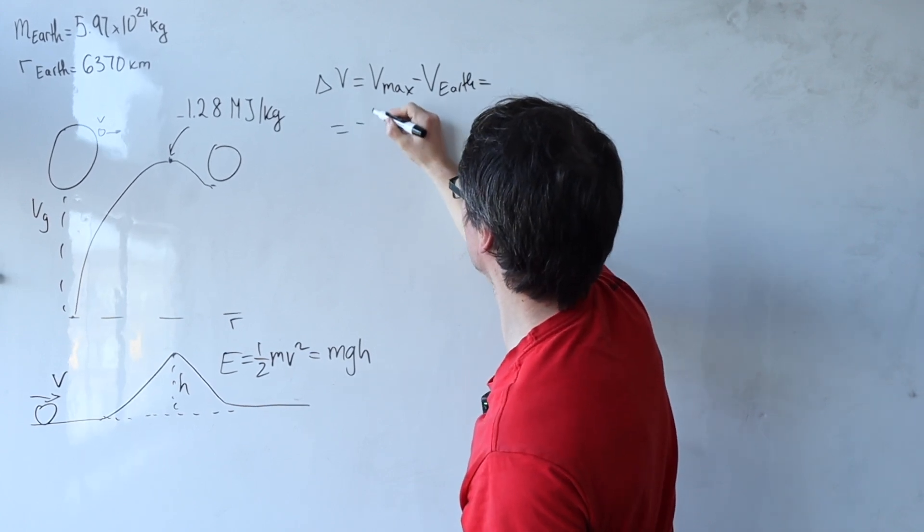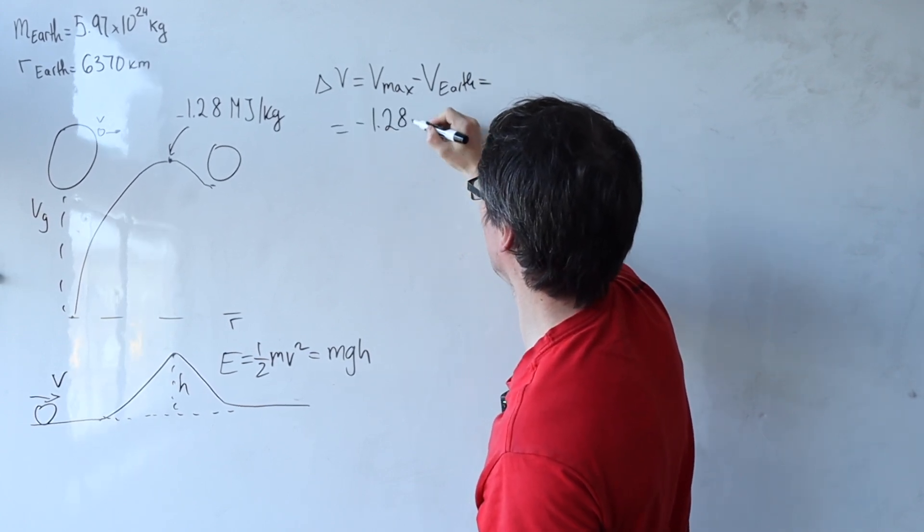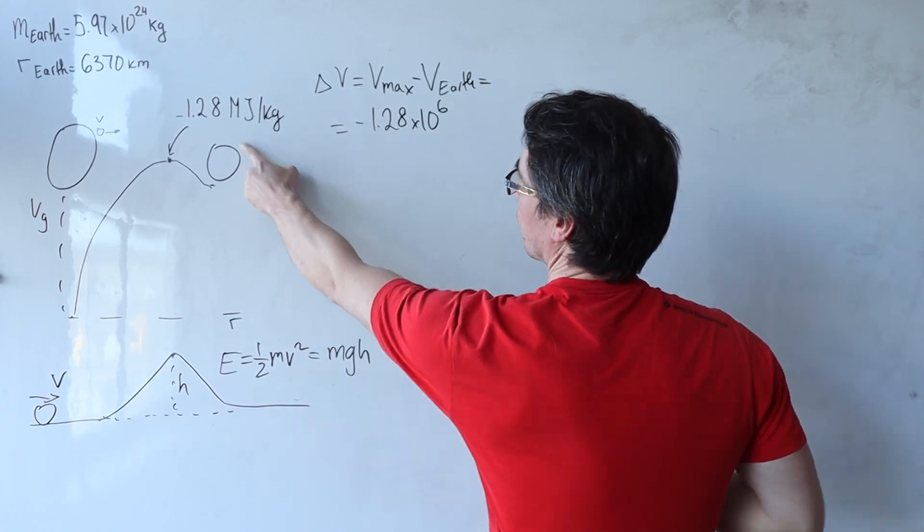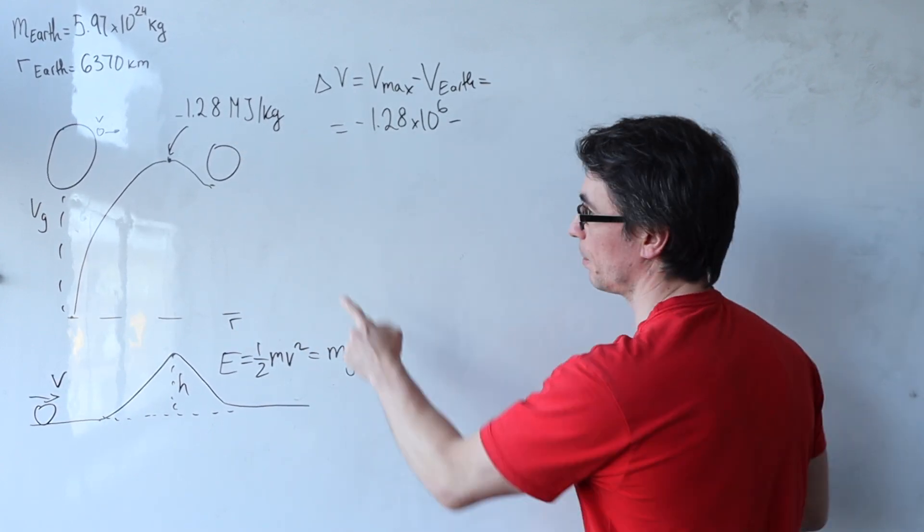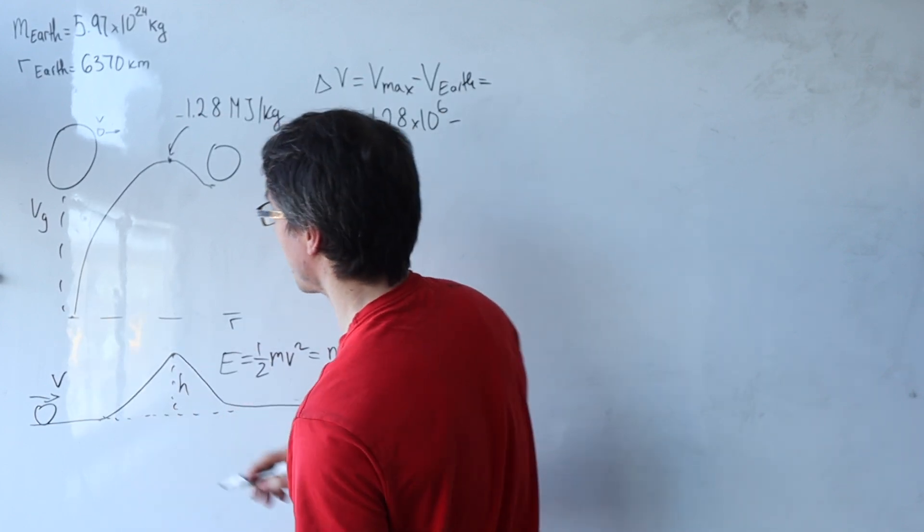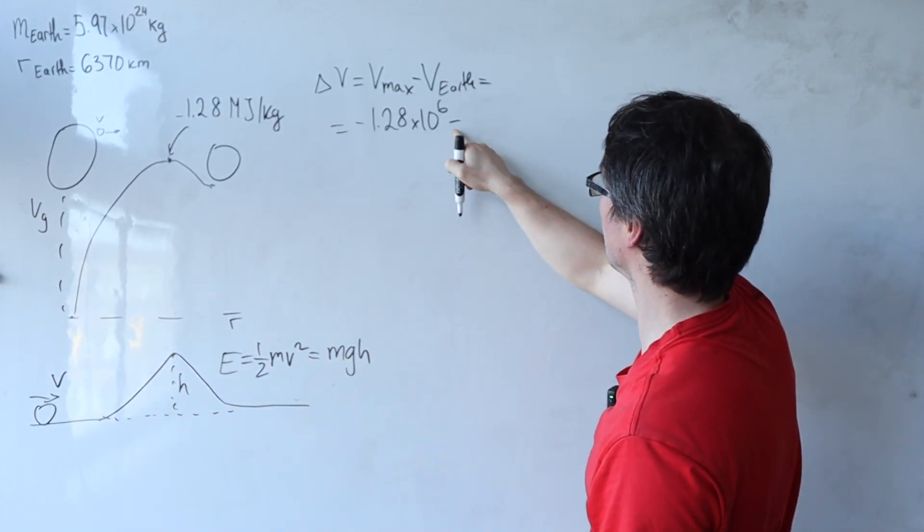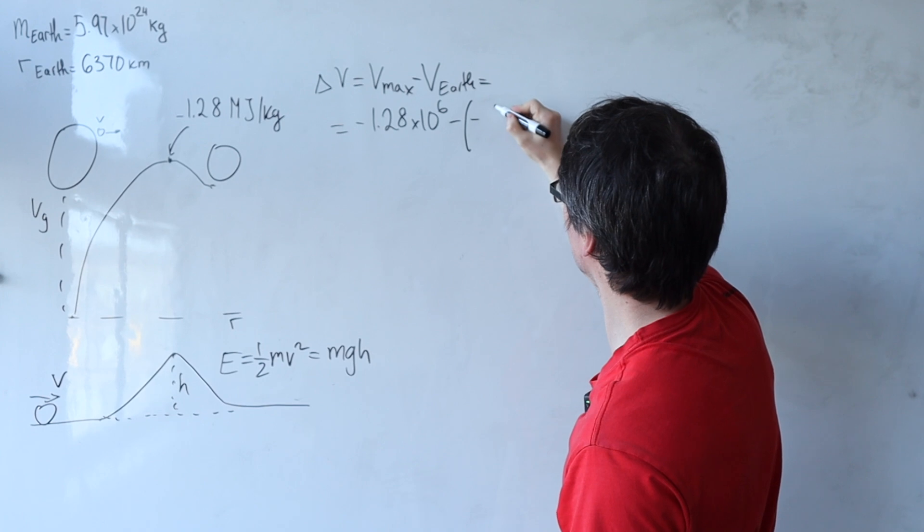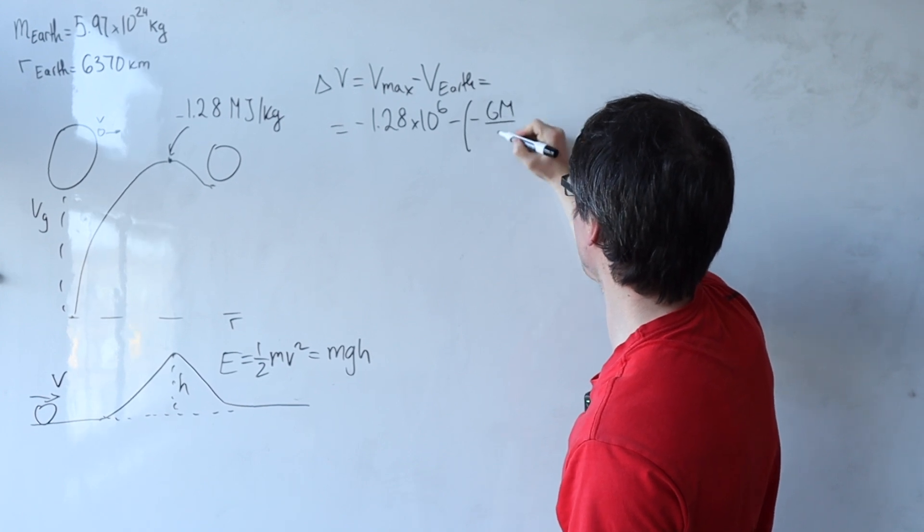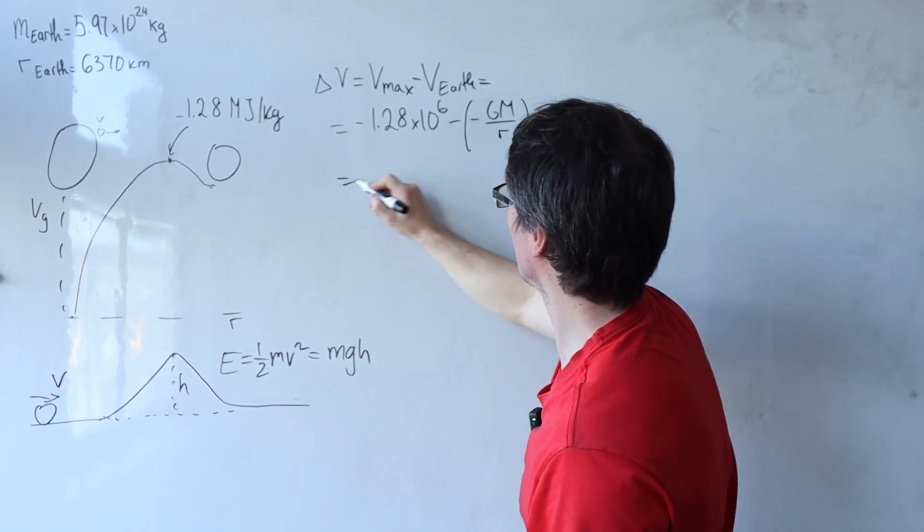This here will just be equal to minus 1.28 times 10 to the power of 6. And then we have to be careful with the minus sign because the potential is still negative here. So it's going to be minus and then the formula is minus GM over r.